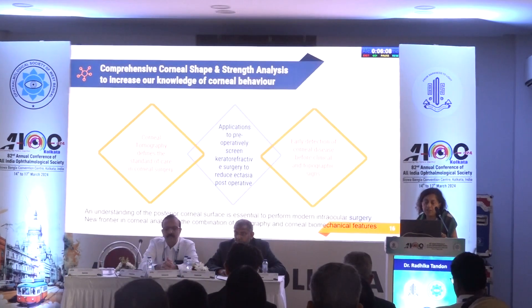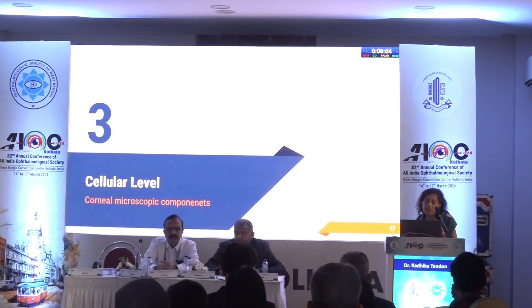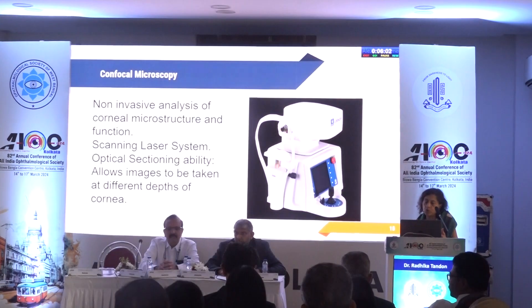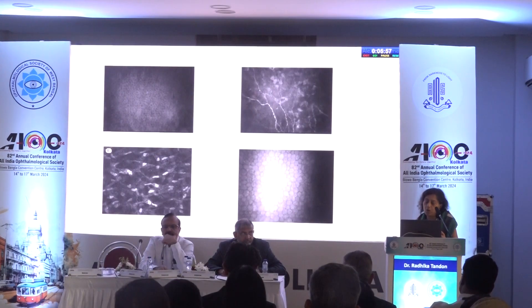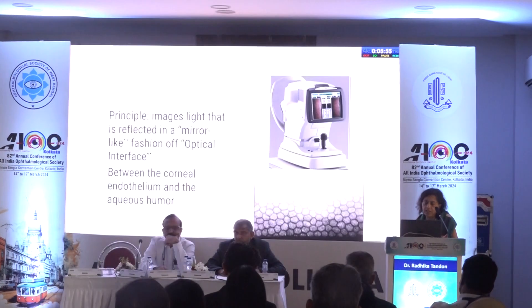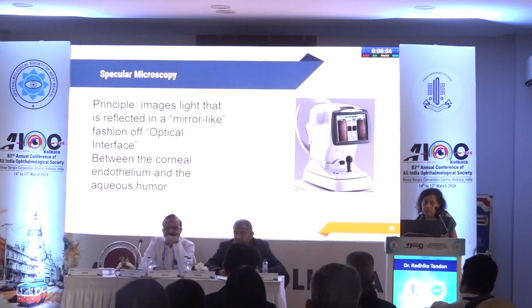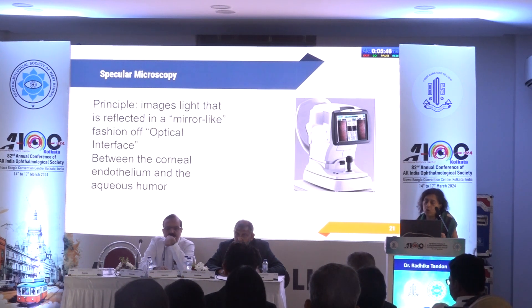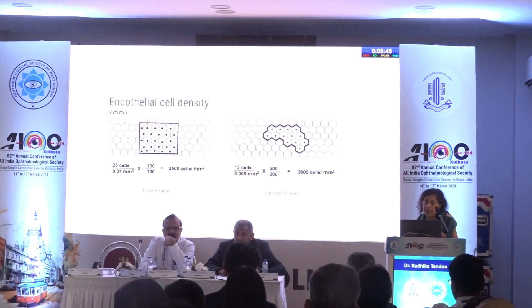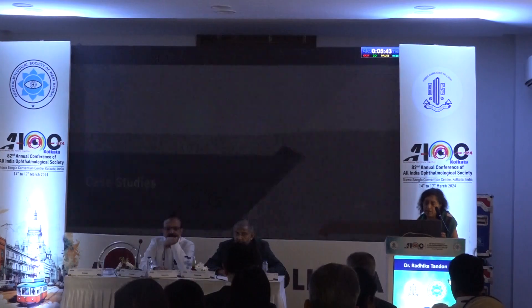I have no financial interest in any of the devices. At the cellular level, confocal microscopy, as already mentioned, gives you additional information — for example, what is the level of involvement and what is the nature of the involvement. And specular microscopy — let's not forget — sometimes you're doubtful. There are cases where you're not very sure what it is and you would also like to know what the endothelium is like.